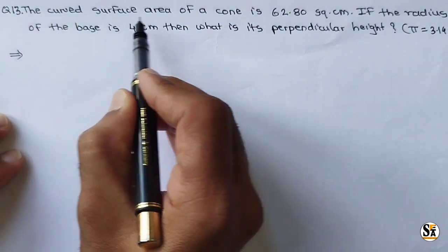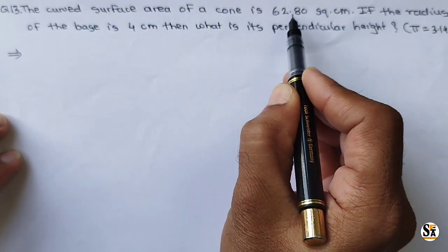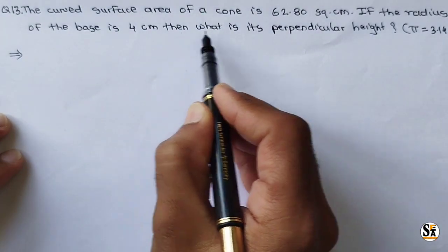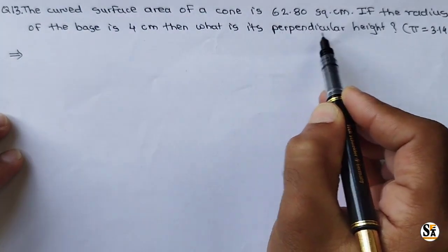Question is given: the curved surface area of a cone is 62.80 square centimeter. If the radius of base is 4 centimeter, then what is its perpendicular height?